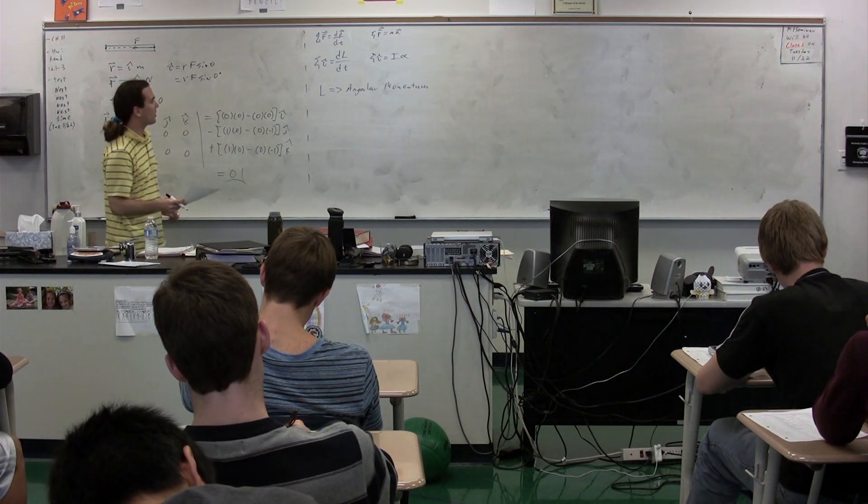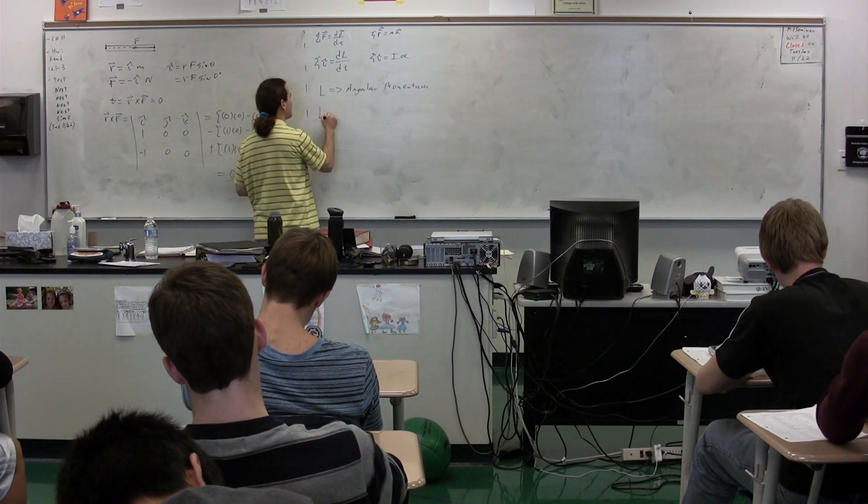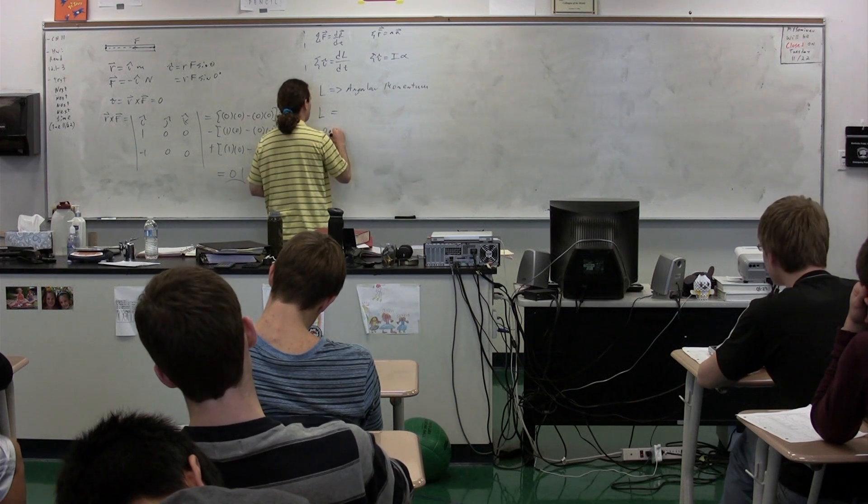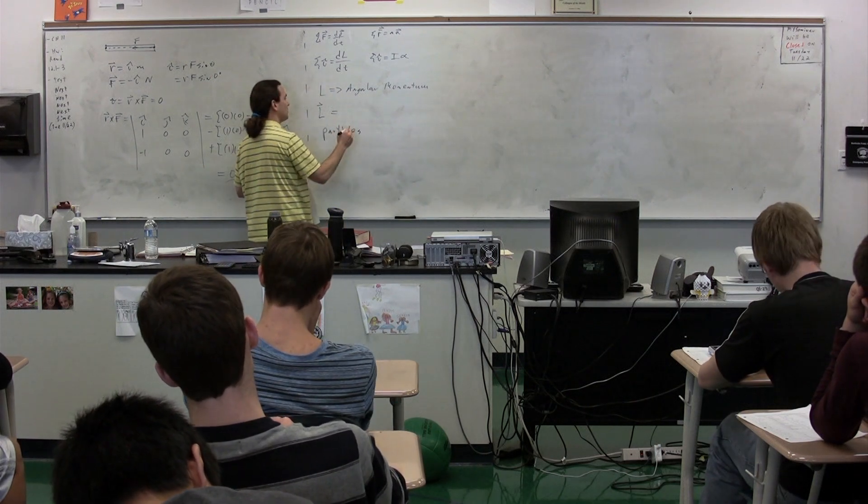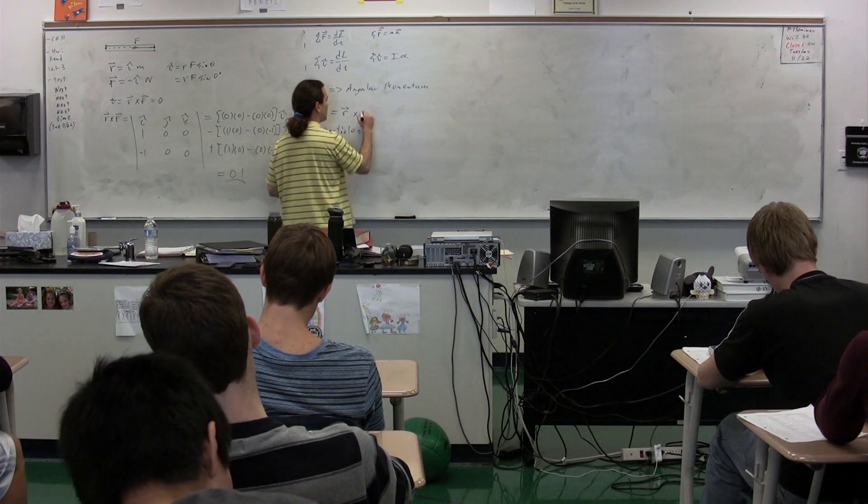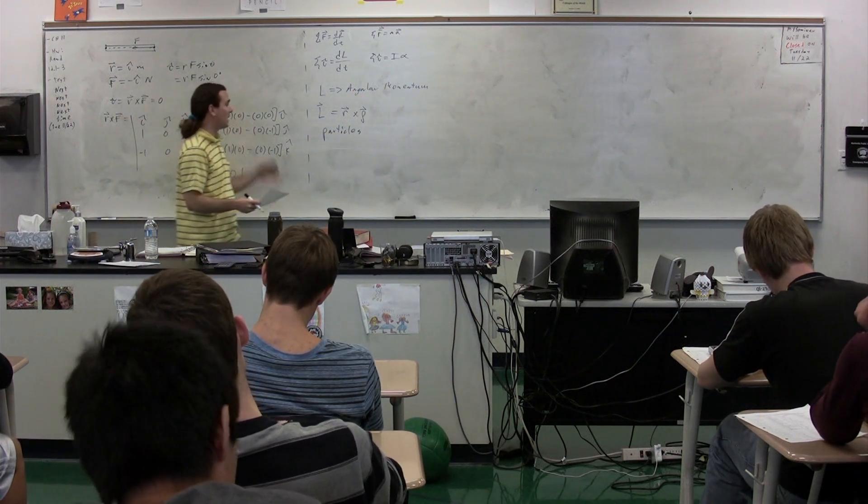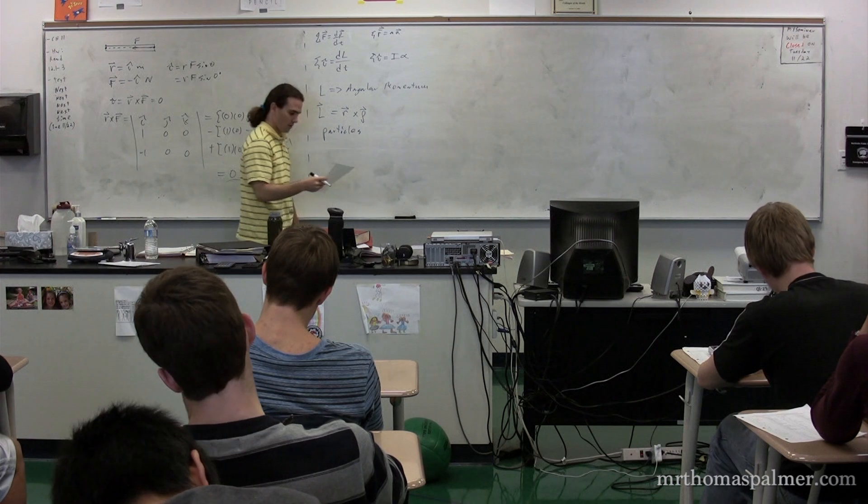We have two different equations for angular momentum. The first one we're going to talk about today is for particles. The angular momentum equals R cross P, which is the lever arm multiplied by the momentum, R cross P.